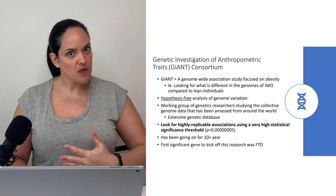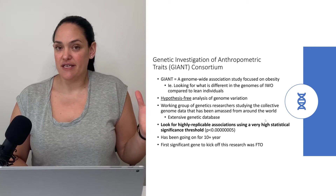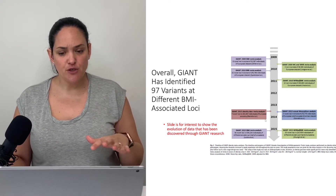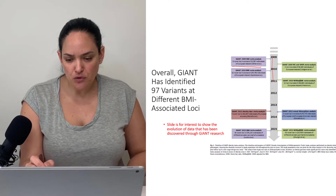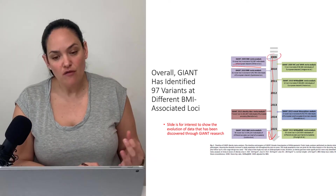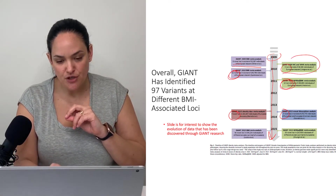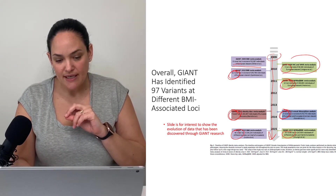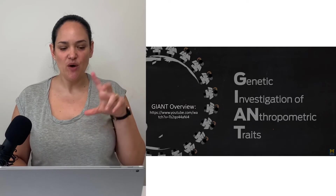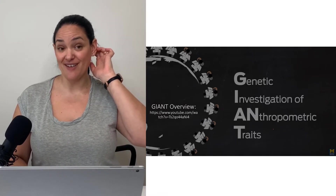This study has been going on for more than 10 years and we're continuing to collect data from it. The big thing that kicked off this area of research was that FTO gene that we talked about in the last module. This slide shows you the evolution of this GIANT study, and it's still going on. In 2009 they found six novel loci in a smaller group of individuals with obesity, but they keep running analyses on different genomic data and more novel loci keep showing up. I want you to watch the video posted on Canvas under this video to get a better overview of the study, because she explains really well what they did and why the findings are so interesting.